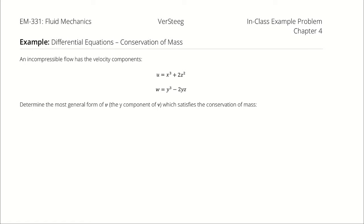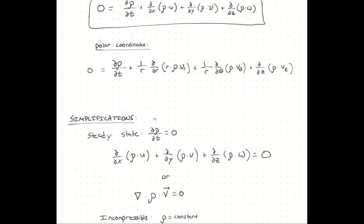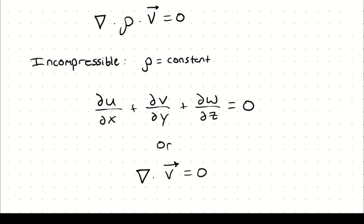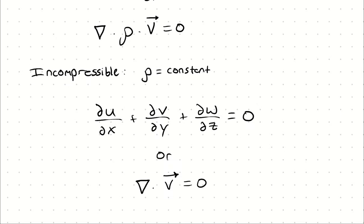To begin with, I recognize that I have an incompressible flow. That means when I deploy my conservation of mass, I can use the simplification: partial derivative of u with respect to x plus partial derivative of v with respect to y plus partial derivative of w with respect to z equals zero.